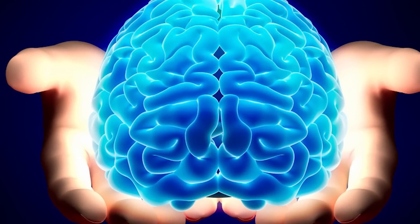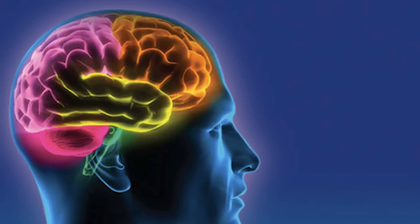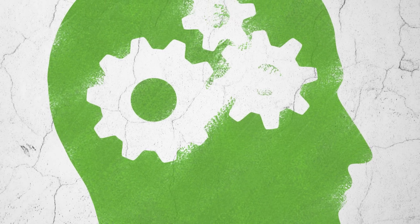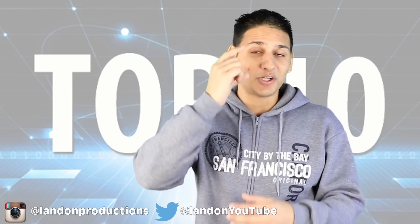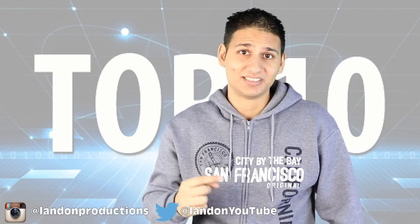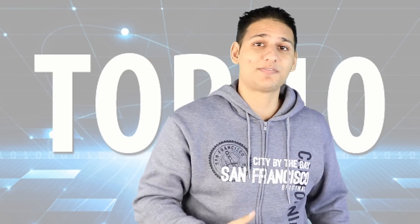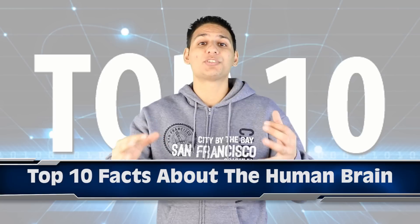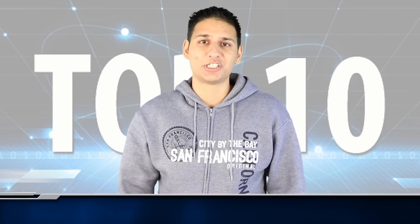So the brain is the most complex organ in our human body. It is responsible for our intelligence, it interprets senses, initiates body movements and controls our behavior. So let's get right into this list. There is so much to learn about this thing up here. I'm talking about the human brain. So starting off at number 10 for the top 10 most amazing facts about the human brain.